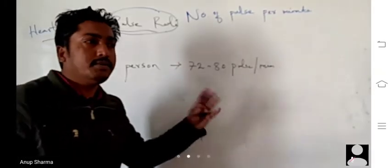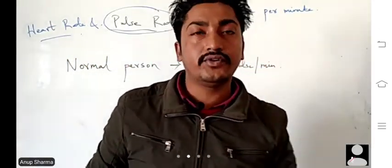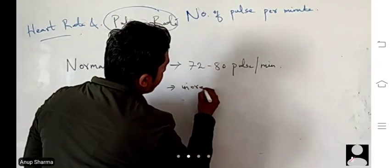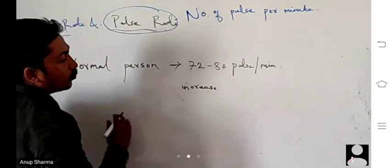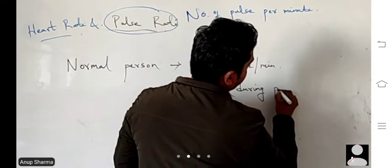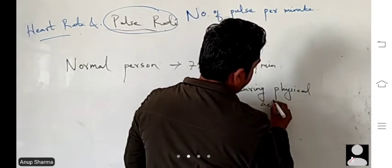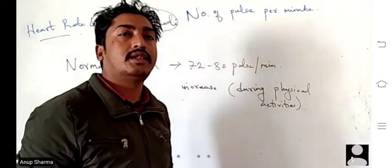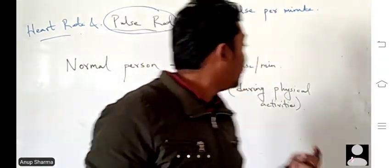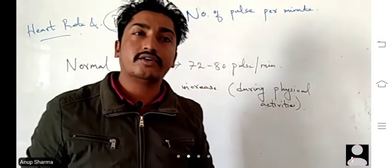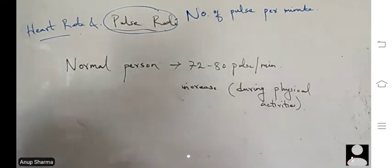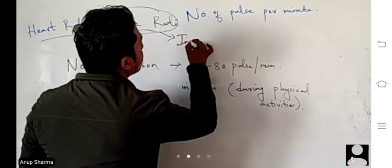This is for a normal, average person. But if you are exercising, running, or performing physical activity, your pulse rate will increase. The pulse rate also increases during hypertension or anxiety. The normal resting pulse rate lies between 70 to 80 pulse per minute. Generally, pulse rate is measured by feeling the pulse at the inner wrist.